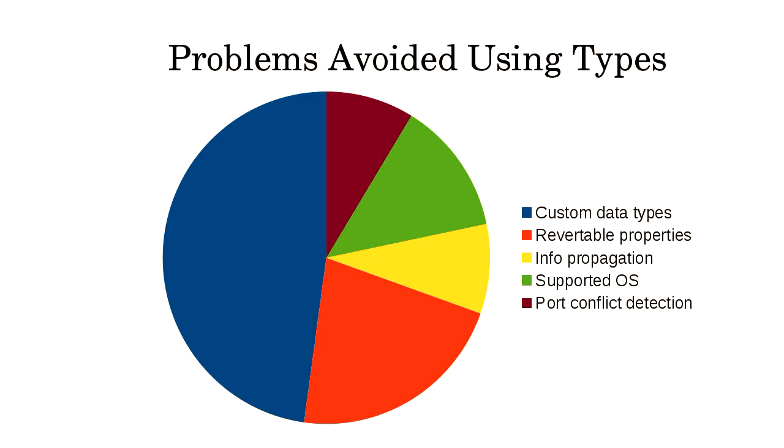To sum up: I started with a few simple custom Haskell data types — properties, hosts, ports. Then I added revertible properties, solved the info propagation problem, added supported OS types, and port conflict detection is coming. I've grown the number of things Propeller prevents at the type level at compile time, and I think it's a big win without significantly impacting the user experience.